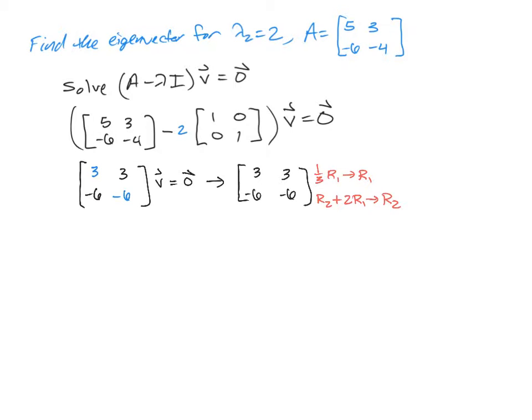And so that row operations is going to leave us with, in the first spot, one-third of 3 is 1, one-third of 3 is 1. And the second spot, negative 6 plus 2 times the 3, is going to give us a 0. And then the same thing happens here because the numbers are the same. That's going to also give us a 0.